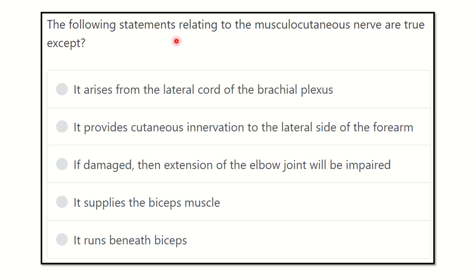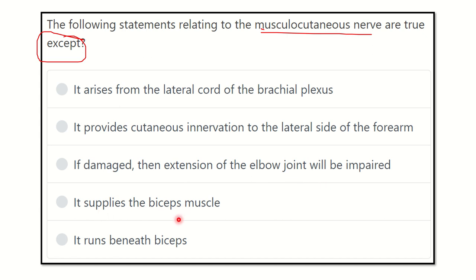Welcome to another question and answer session. The question states: 'The following statements relating to the musculocutaneous nerve — all are correct except.' That means we have to identify which statement about the musculocutaneous nerve is false. The options are given and we have to find out which is not a function or correct feature of the musculocutaneous nerve.